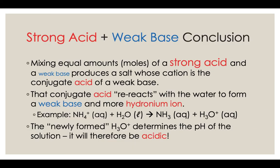So here's the strong acid–weak base conclusion. When we mix equal moles of strong acid and weak base — in other words, at the equivalence point — there's no strong acid or weak base left over. When we react those, you make a salt, and the cation of that salt is the conjugate acid of a weak base. That conjugate acid has a secondary reaction with the water also formed in the first reaction, making your weak base and your hydronium ion. It's those extra H3O⁺ ions that make it acidic.